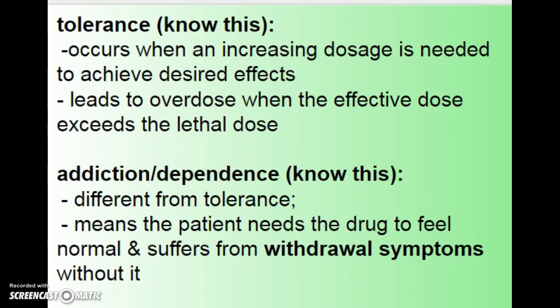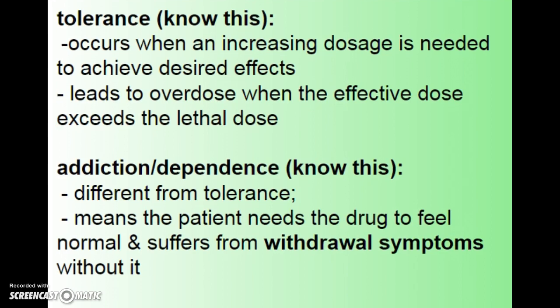Tolerance occurs when an increasing dosage is needed to achieve the desired effect, and it tends to lead to overdose because eventually the effective dose exceeds the lethal dose. Addiction and dependence is different from tolerance — it means the patient needs the drug just to feel normal. Tolerance is needing more and more of the drug. They often go hand in hand, but they are two distinct issues.